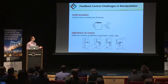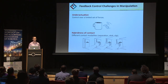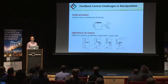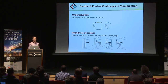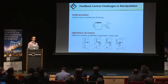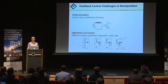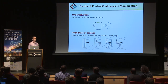We attribute this in part to two theoretical challenges of feedback through contact. The first challenge is that when you interact with an object through contact, you can only exert control over a limited set of forces. For example, pushing a coffee mug, you can only push on the mug — you can't pull. Also, the forces that you can impress on the object are limited to the friction cone, and your controller needs to reason about these limitations.